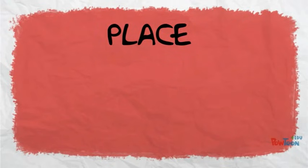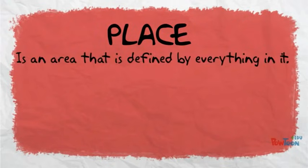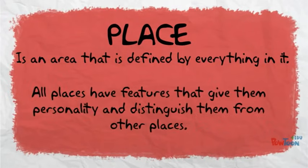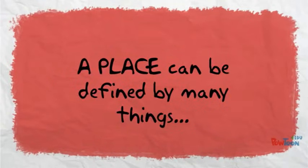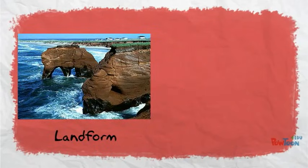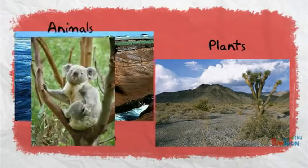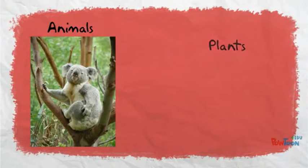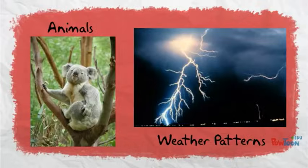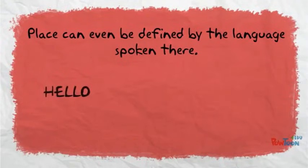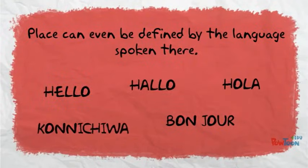Next up is place. Place is an area that is defined by everything in it. All places have features that give them personality and distinguish them from other places. A place can be defined by many things, such as the landform of a place, the types of plants found there, the types of animals who live there, the type of weather patterns, and even the language spoken there.